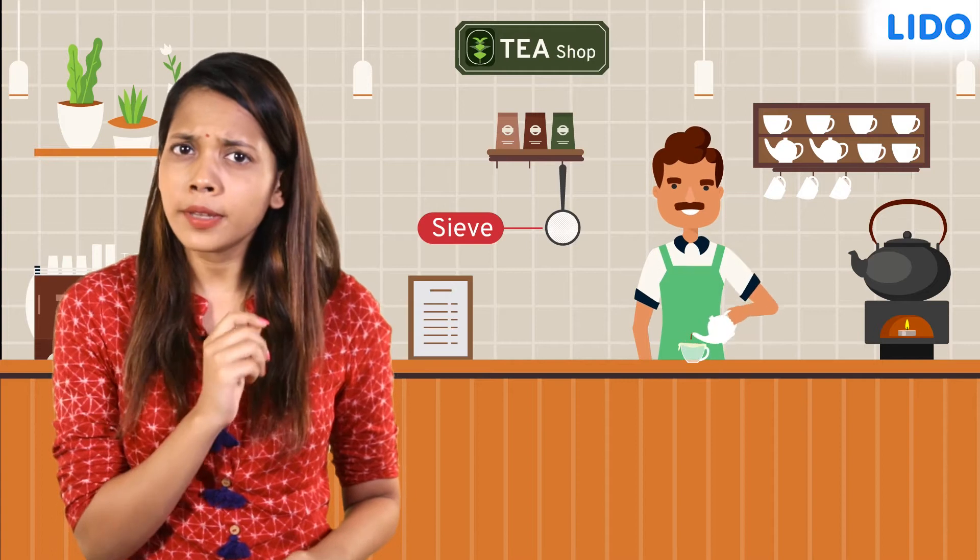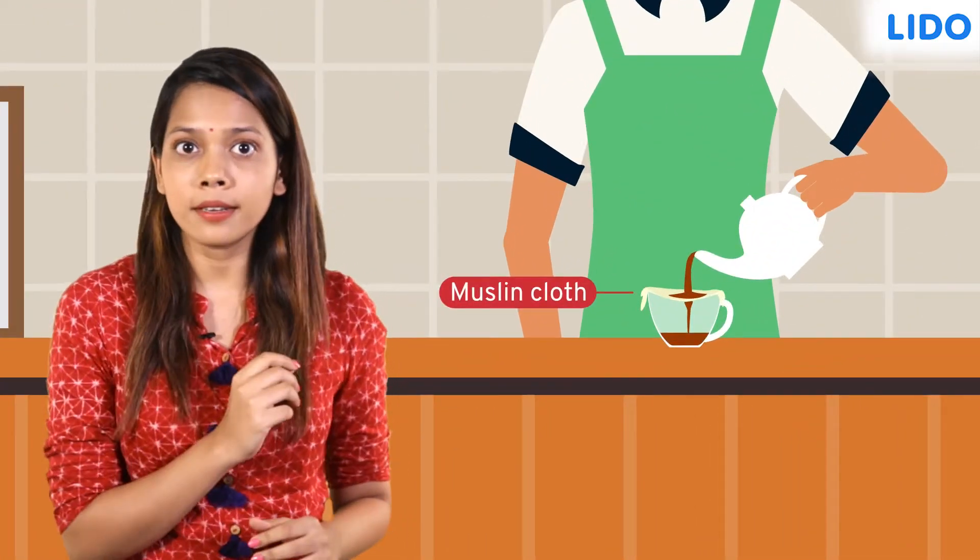Hey guys, today we are going to have some Garam Chai at a tea stall. While I was standing here, I noticed that the Chai Wala is not using a sieve to filter the tea. Instead he's filtering it through a muslin cloth.